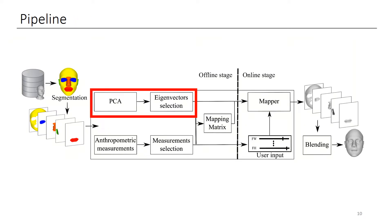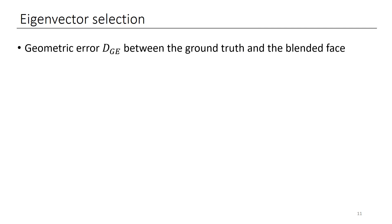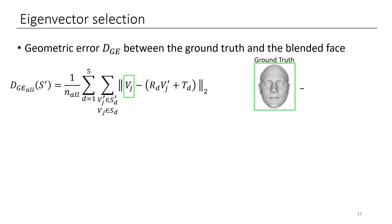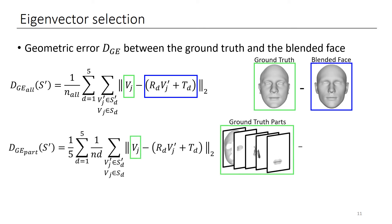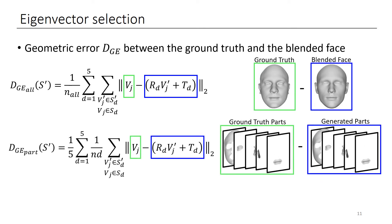Afterward, we run PCA on the parts and select the eigenvectors to reconstruct the shape accurately. We provide the user with a measurable error, which is more precise than relying solely on eigenvalues across different parts. We assess the accuracy of the reconstruction by calculating the average geometric error between the ground truth and the blended face. We record the average per-vertex Euclidean distance over all vertices, then compute the average per part to ensure that parts with more vertices don't use most of the eigenvector budget at the expense of parts with fewer vertices.